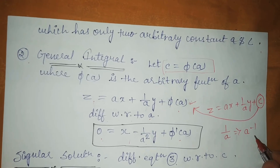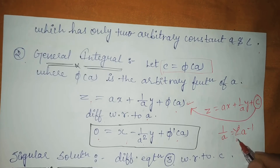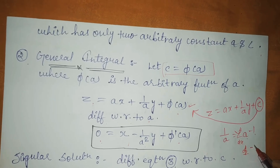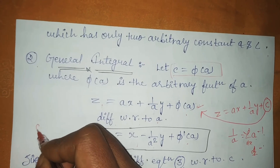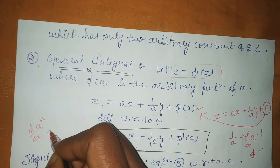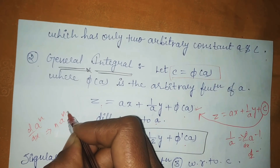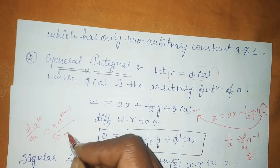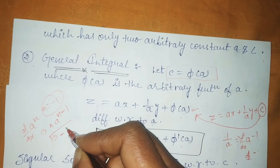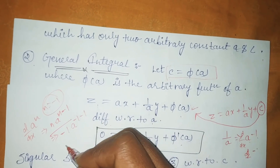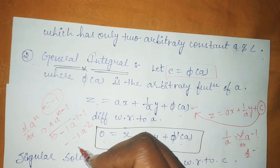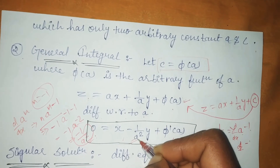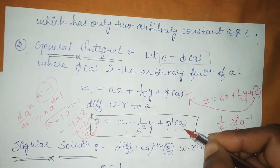For the 1/A term: we write 1/A as A^(−1), and using the power rule d/dx[A^n] = nA^(n−1), with n = −1, differentiation gives −1 · A^(−2), which equals −1/A². So the differentiated equation includes the term −1/A². Differentiating φ(A) with respect to A gives φ'(A).